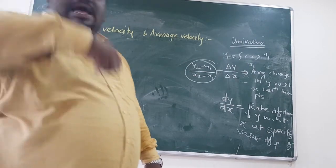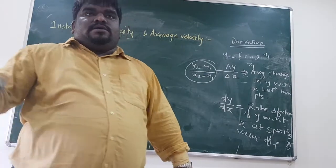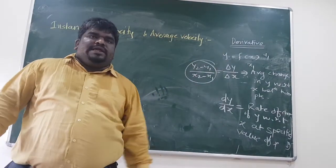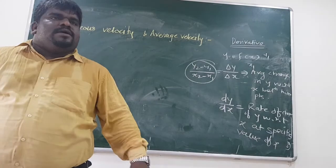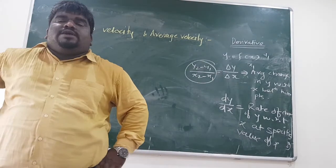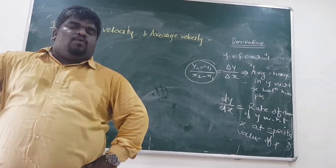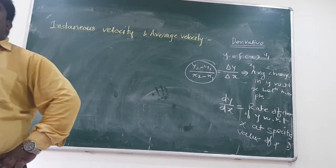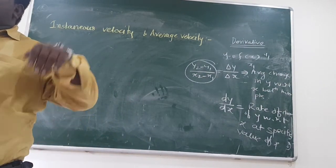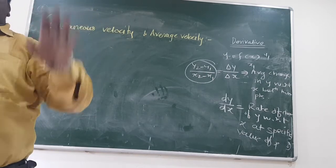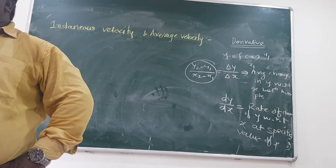In class 9, the case for you was: from here to Henkowli the distance is, let's say, 50 km. You took 1 hour. So what was your average speed — or average velocity, provided you are moving in a straight line? 50 km per hour.